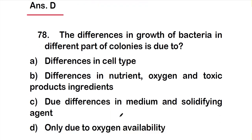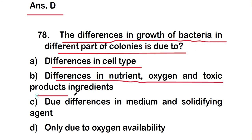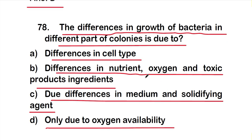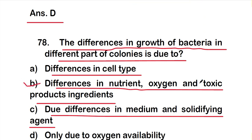Question number 78: The differences in growth of bacteria in different parts of colonies is due to which factor? Options are: A) differences in cell type, B) differences in nutrient, oxygen, and toxic product gradients, C) differences in medium and solidifying agent, D) only due to oxygen availability. The right answer is option B — differences in nutrient, oxygen, and toxic product gradients.